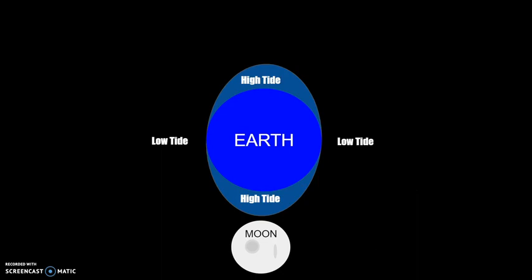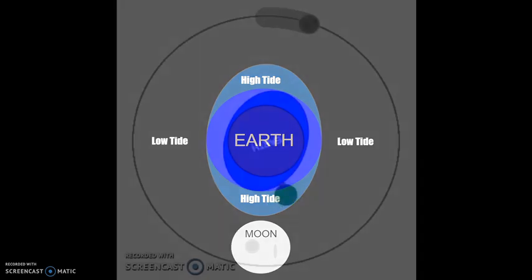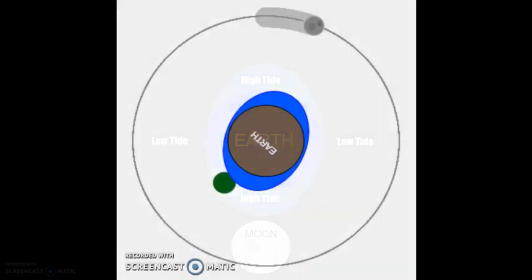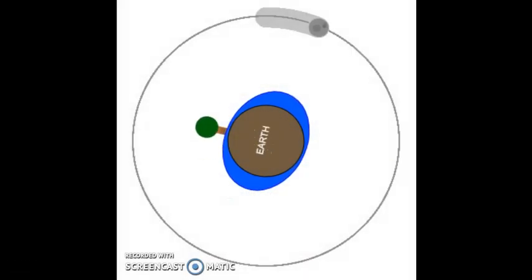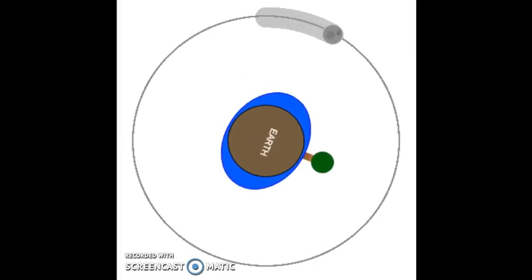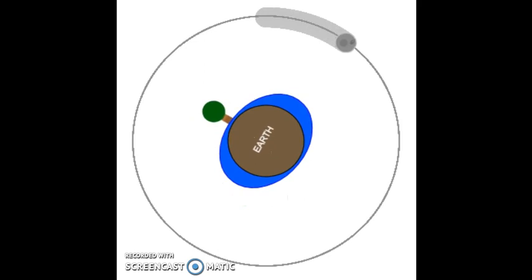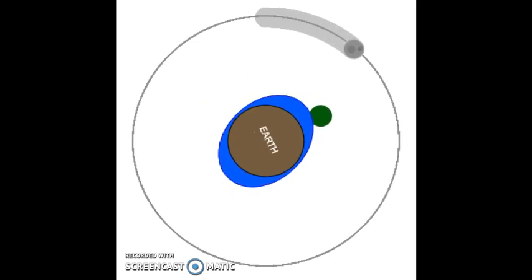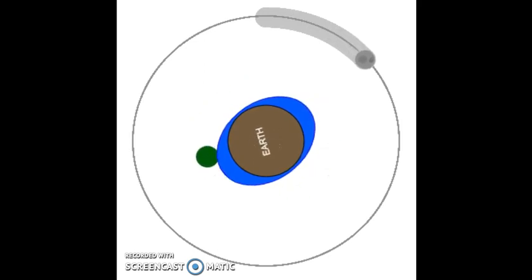So the high tide is always on the front side — the side closest to the moon of the earth — and the back side. On this visual, you can see that the moon and the bulges move together. When the moon moves around the earth, the bulges move with it, and you know that is caused because of the moon's gravity.